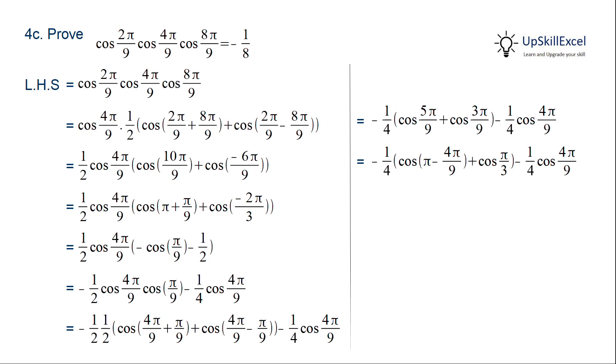Cos(π - 4π/9) lies in the second quadrant, hence its value will be -cos 4π/9. Cos π/3 lies in the first quadrant and can be replaced by 1/2. We can now multiply the terms by -1/4 and cancel out the common terms, giving us the result as -1/8, which is equal to RHS.